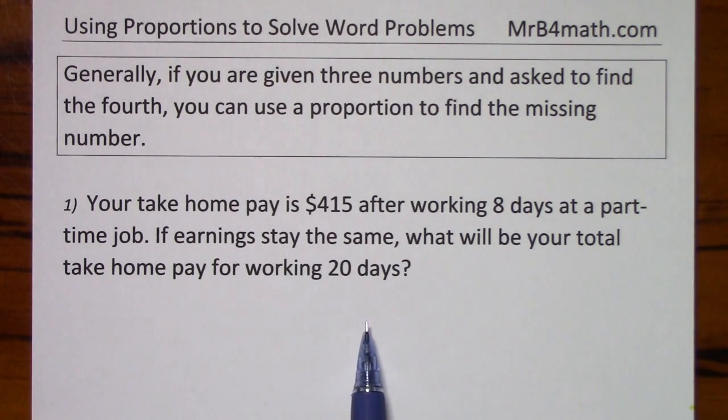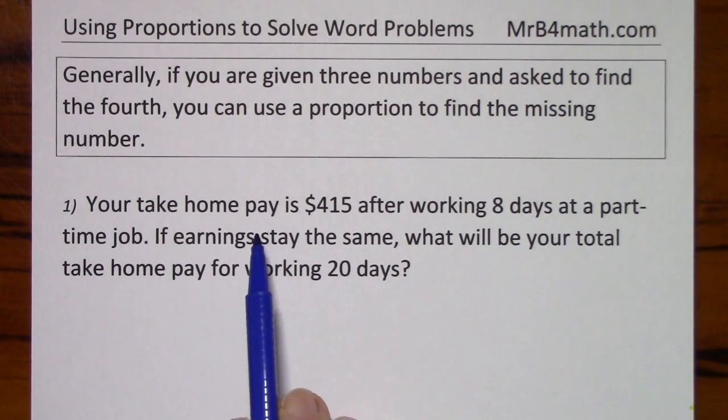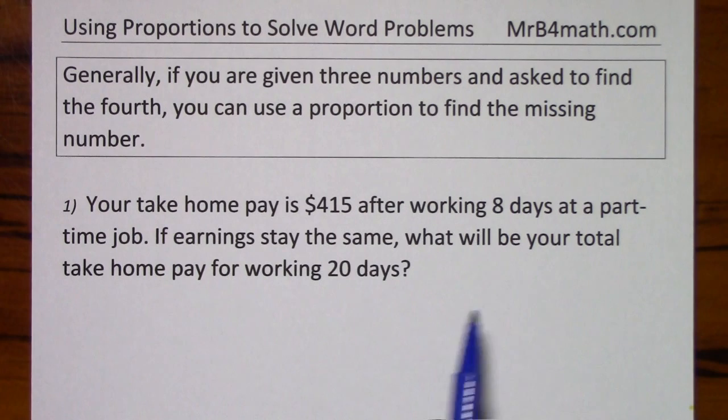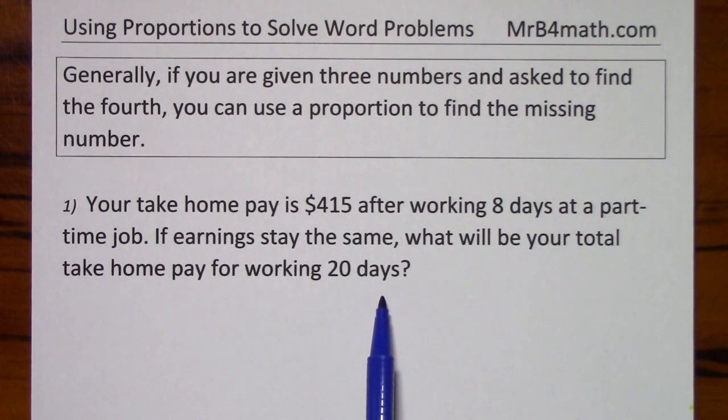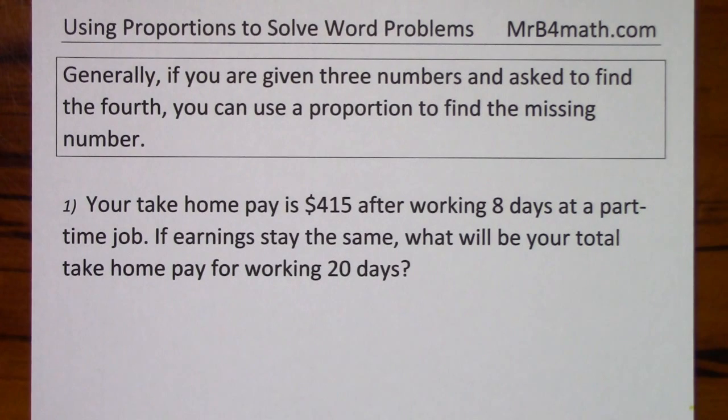I'll give you a moment to read this. Notice we're given three numbers: the pay is $415, eight days, and they want total pay for working 20 days. We're given these three numbers and they want the fourth. A proportion is a good way to set this up.